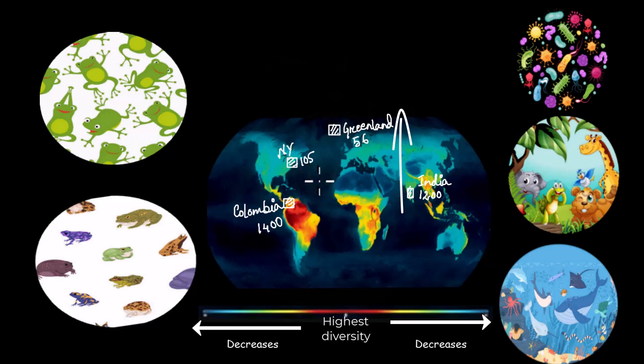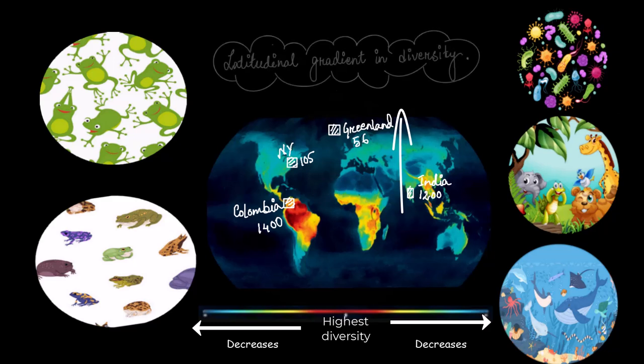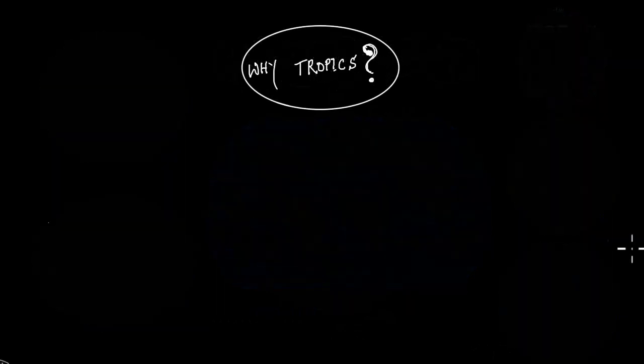Since we see this decrease and this gradient as we move along the latitude, we call it the latitudinal gradient in diversity. All right, now let's get back to the prime question of this video: Why the tropics? Why are tropics this chosen area for more biodiversity?